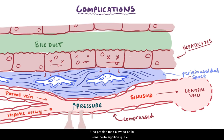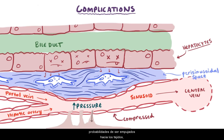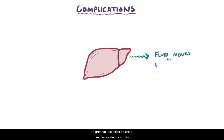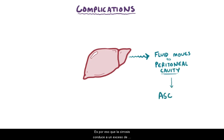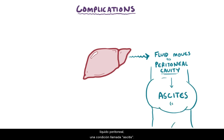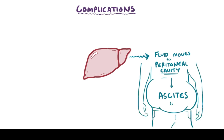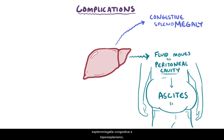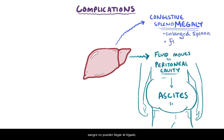Higher portal vein pressure means that fluid in the blood vessels is more likely to get pushed into tissues and across tissues into large open spaces like the peritoneal cavity. That's why cirrhosis leads to excess peritoneal fluid — a condition called ascites — and can result in complications like congestive splenomegaly and hypersplenism, where the spleen becomes enlarged because fluid and blood can't get into the liver and backs up into the spleen instead.